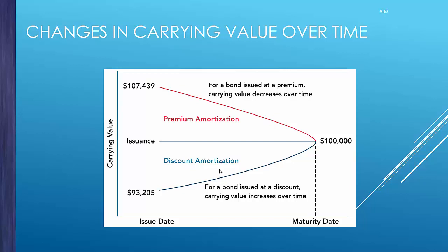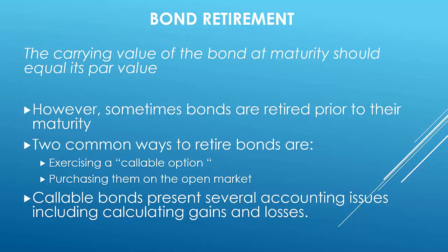Once a bond has been issued, there are ways to retire it. One option is a callable bond — the company purchases those bonds back, pays everyone back, and the obligation is done. You can also purchase bonds back on the open market.